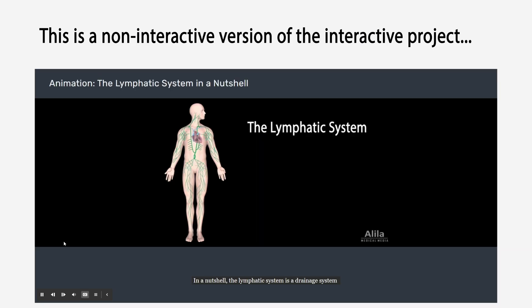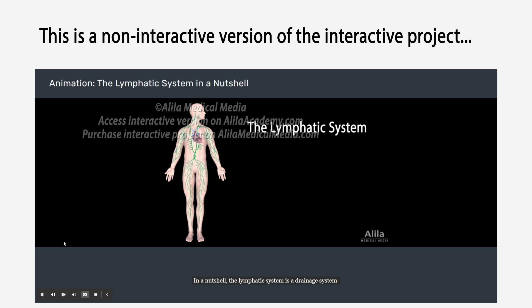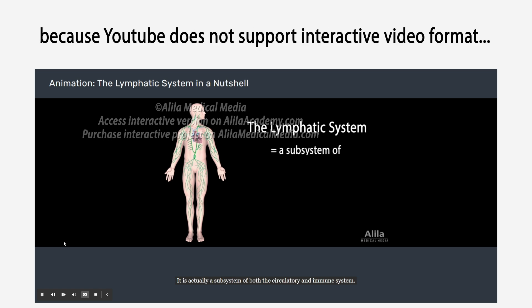In a nutshell, the lymphatic system is a drainage system that removes excess fluid from body tissues and returns it to the bloodstream. It's actually a subsystem of both the circulatory and immune system.